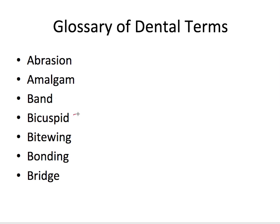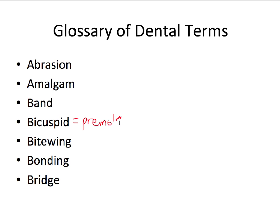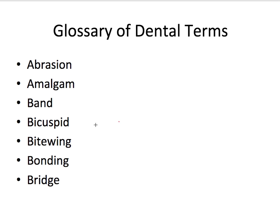A bicuspid is another name for a premolar — it's called a bicuspid because the premolar has two cusps or pointed areas on top, and the premolars are located in front of the molars. A bitewing refers to an x-ray commonly used in dentistry — it's probably the most common type of x-ray taken at a routine exam, taking a picture of the crowns of both the upper and lower molars and premolars.